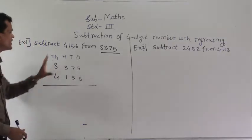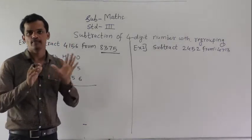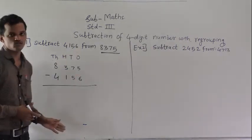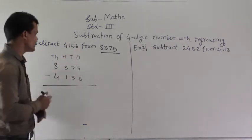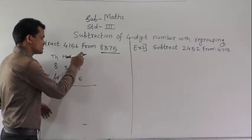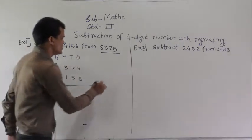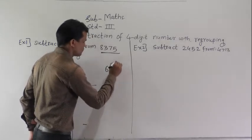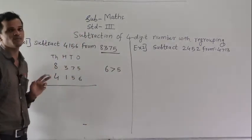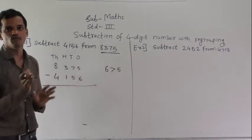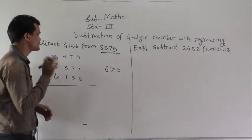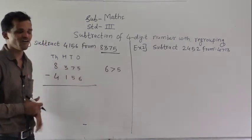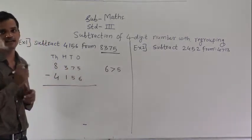We have arranged these two numbers into columns. Now subtract the numbers, starting from the ones place. Here 5 minus 6 — 6 is greater than 5, so we can't subtract the bigger number from the smaller number. We can't subtract 6 ones from 5 ones.